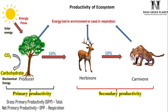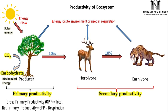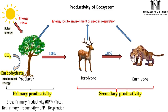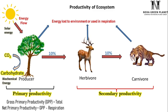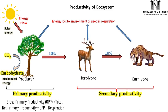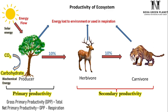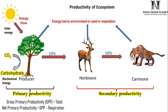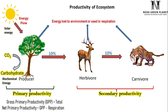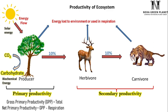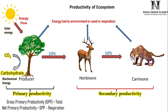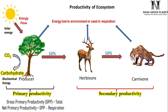The total amount of stored energy at the level of herbivores or carnivores is known as secondary productivity. The difference between primary and secondary productivity is that primary productivity is the total organic matter stored at the level of producers, i.e. plants. Secondary productivity, on the other hand, is the amount of organic matter stored at the level of consumers — that means herbivores or carnivores.